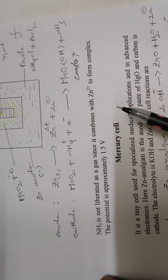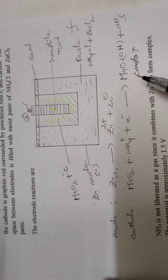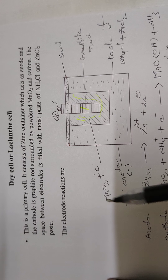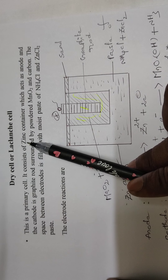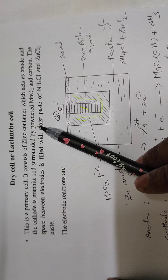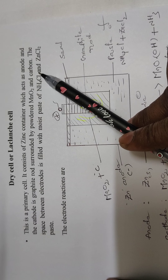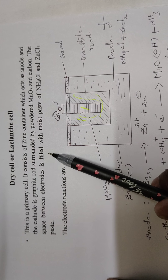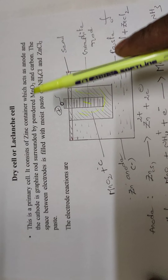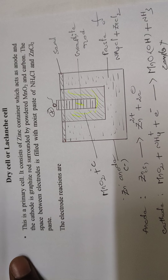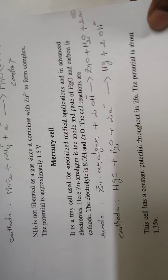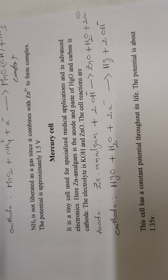The potential of the Leclanche cell is approximately 1.5 volts. To summarize: the Leclanche cell is a primary cell consisting of a zinc container (anode) and a graphite rod surrounded by powdered MnO2 and carbon (cathode). The space between the electrodes is filled with a moist paste of NH4Cl and ZnCl2.